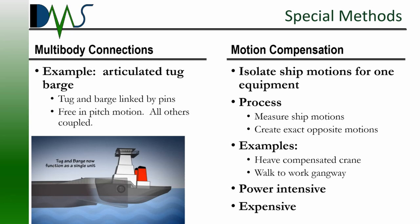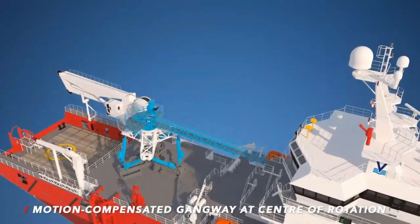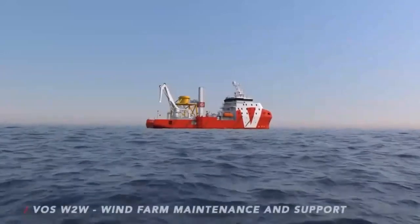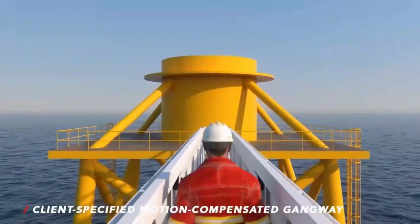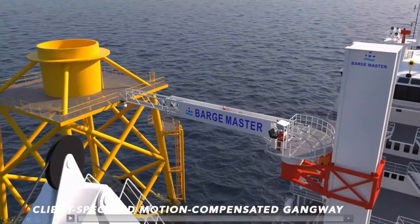Sometimes the simpler solution is to just isolate our equipment from the ship motions — that's where we get into motion compensation. If we need to control the motions for just a specific component on the ship, we can use a computer to measure the ship motions and then use hydraulics to create the exact opposite motion on our component. That's power intensive and expensive, but sometimes really neat. A walk-to-work vessel transfers personnel to a fixed structure at sea — wind farm maintenance is a big case where we're starting to see this. The left side of the gangway will not move while everything connected to the ship on the right side does move.